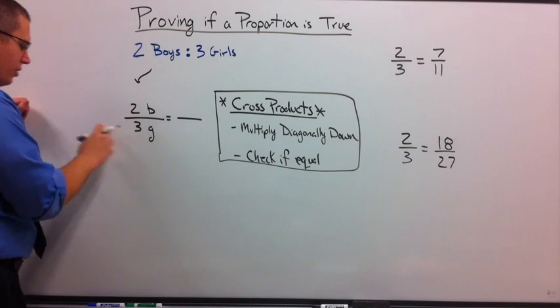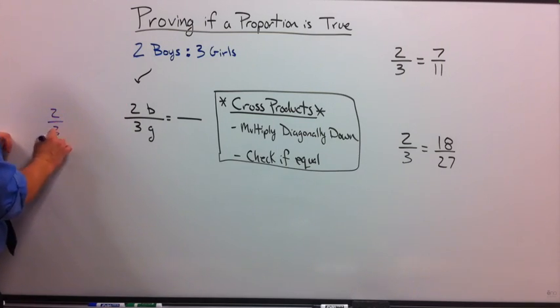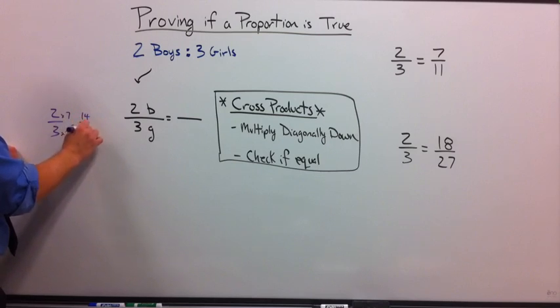So for every two there's three. For every two there's three. You can think about it in terms of fractions. Let's just pick a bigger fraction that's equal to that. What if I times by seven, times by seven would give me 14 over 21.